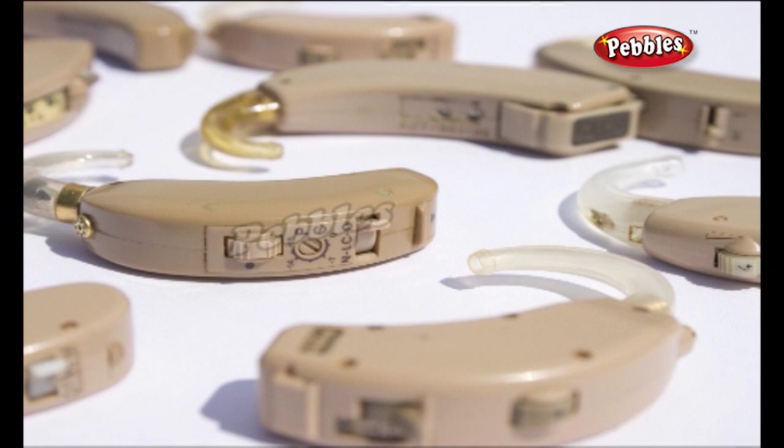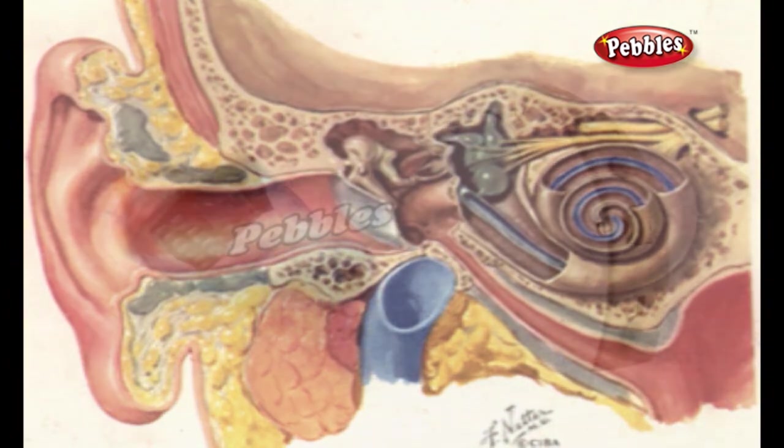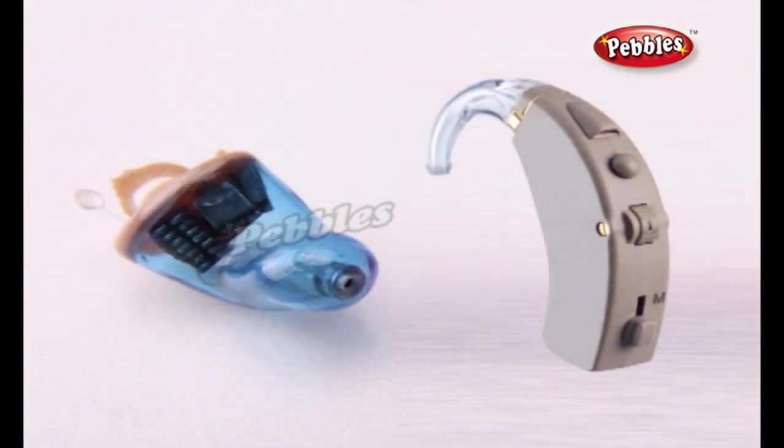That's where hearing aids come in. They can't help everyone with impaired hearing, but they can often make a difference to hearing problems caused by a loss of cochlear hair cells. Hearing aids come in two main kinds: analog hearing aids and digital hearing aids.